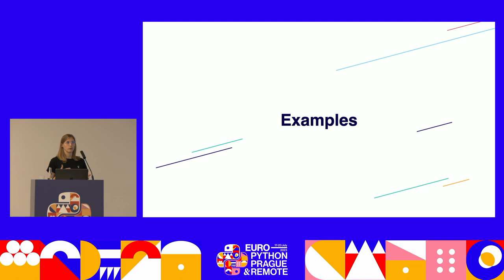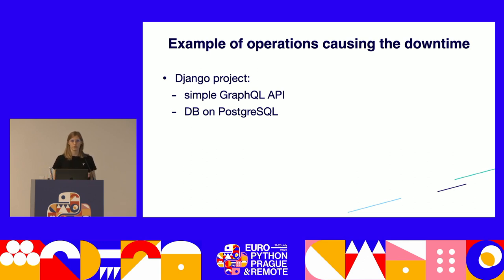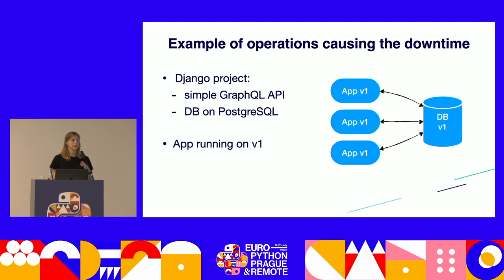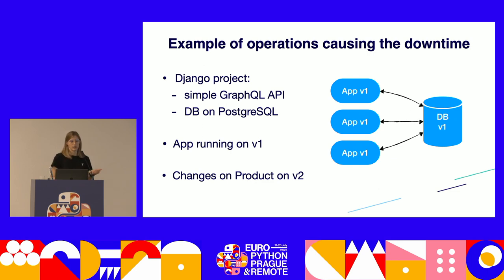Let's move on to examples. I will start by showing you the problematic operations and then move to the solutions. For this talk I created a sample project with a simple GraphQL API and a PostgreSQL database — the same configuration as Sailor — and I will give you the link to this project at the end of the presentation. Let's assume we are currently running version V1 of this system. We have multiple app clusters using a shared database, and we plan to introduce some changes on the product type to be released in the next version V2.